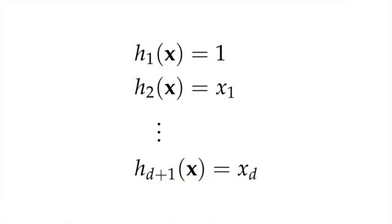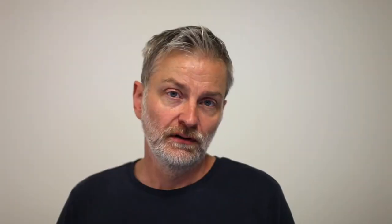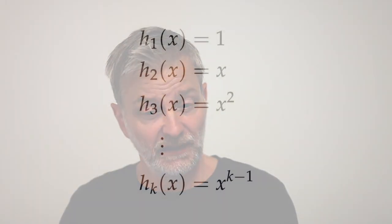We've already seen this in action. Adding a constant dummy feature x0 to all of our input vectors is tantamount to defining a set of transformation functions that look like this. The new extra basis function h1 is independent of x, allowing the model to add a global offset. The standard teaching example for basis expansion is polynomial fitting, where you define a set of monomial expansion functions that might look something like this.